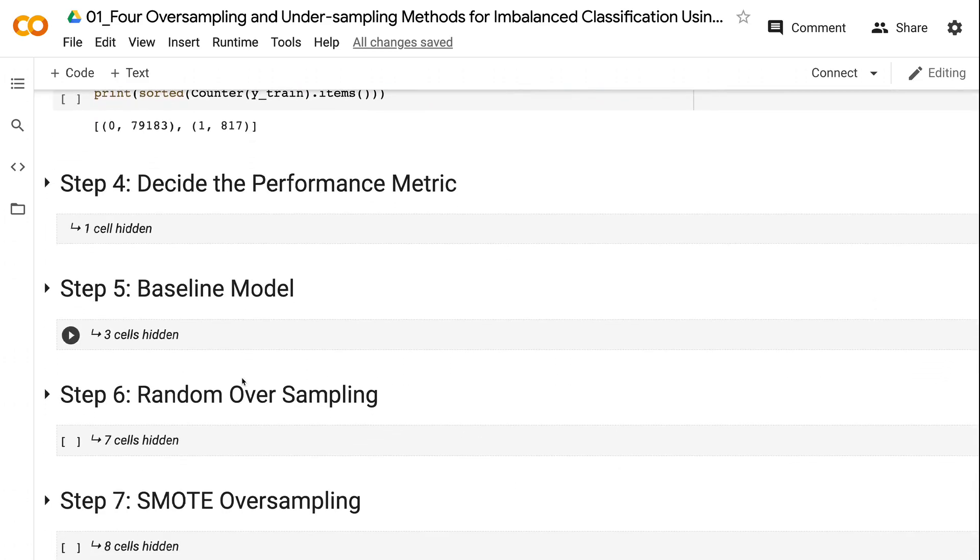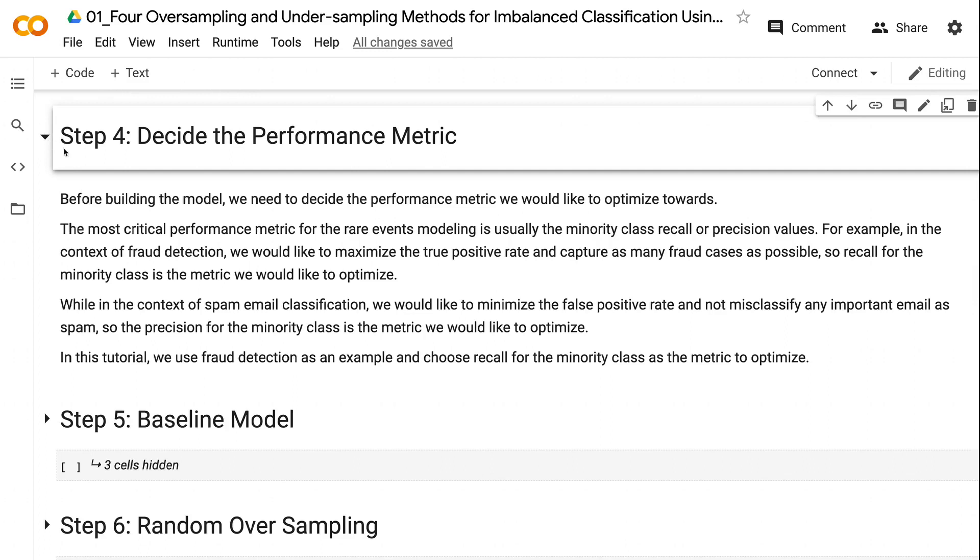Before building the model, we need to decide the performance metric we would like to optimize towards. The most critical performance metric for rare events modeling is usually the minority class recall or precision values. For example, in the context of fraud detection, we would like to maximize the true positive rate and capture as many fraud cases as possible. So recall for the minority class is the metric we would like to optimize.